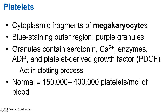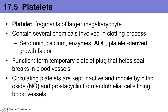Platelets are cytoplasmic fragments of a very large cell called the megakaryocyte. When looking at blood smears, the outer regions of platelets stain blue while the inner areas contain purple-staining granules, which act in the clotting process. These granules contain serotonin, calcium, enzymes, ADP, and platelet-derived growth factors (PDGF). The normal range for platelets is 150,000–400,000 per microliter of blood. Their function is to temporarily produce a platelet plug, which seals breaks in blood vessels. Circulating platelets are kept inactive and mobile by nitric oxide and prostacyclins released from endothelial cells lining the blood vessels.